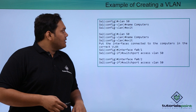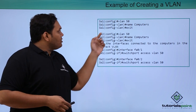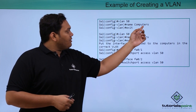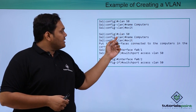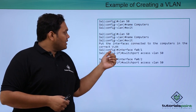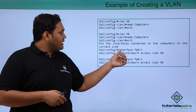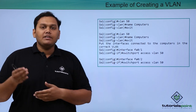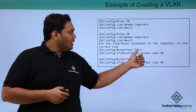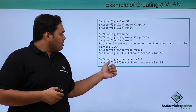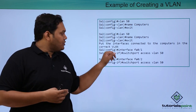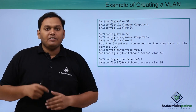Here is an example with two switches. VLAN 50 is configured on Switch 1 with the name 'computers', and VLAN 50 is also configured on Switch 2 with the name 'computers'. On Switch 1, the interface mode for fa0/1 is set to switchport access mode, with VLAN 50 enabled on interface 1 and interface 2 as well — meaning Switch 1 and Switch 2 both have access to VLAN 50.